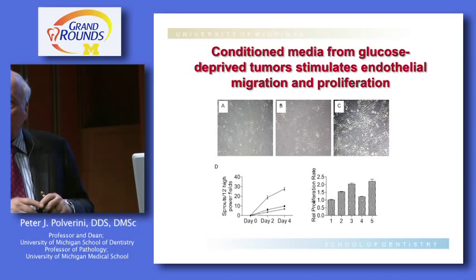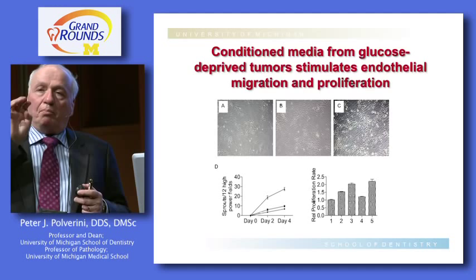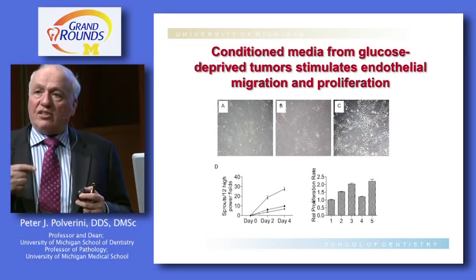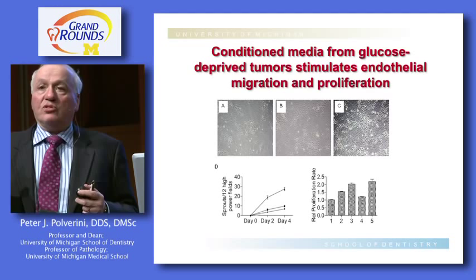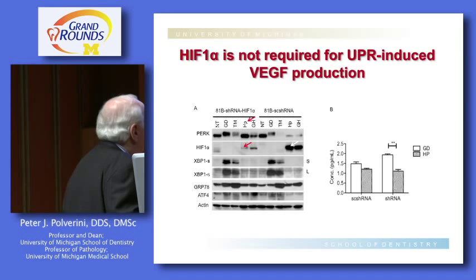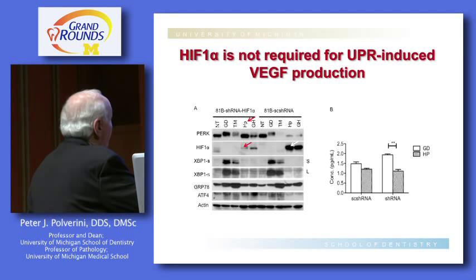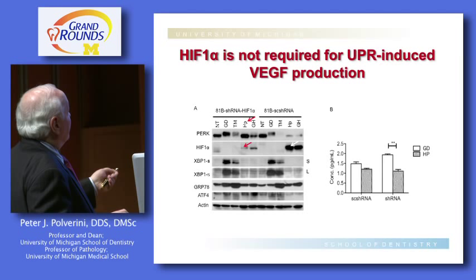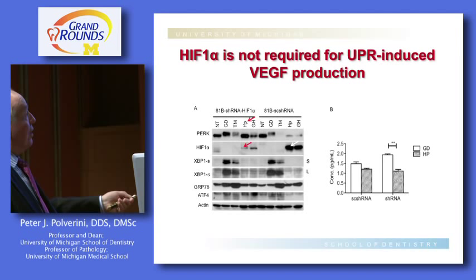HIF-1-alpha is an important enzyme activated with hypoxia. When activated, it can stimulate vascular endothelial growth factor production. There is a disease called von Hippel-Lindau syndrome in which people lack this gene, therefore overproducing HIF-1-alpha and vascular endothelial growth factor. However, HIF-1-alpha is apparently not required for the ability of the unfolded protein response to activate angiogenic production. When you use short hairpin RNA to downregulate HIF-1-alpha, you still get activation of the unfolded protein response, and knocking down HIF-1-alpha does not affect glucose-induced production of vascular endothelial growth factor — so it is an independent process.